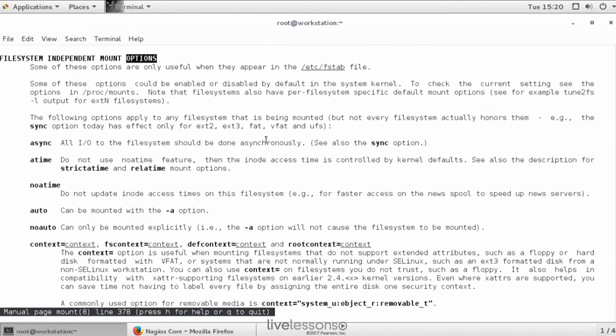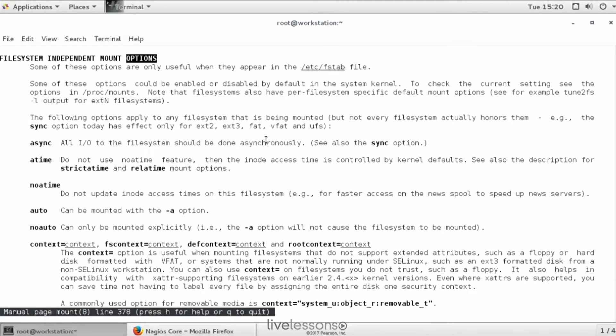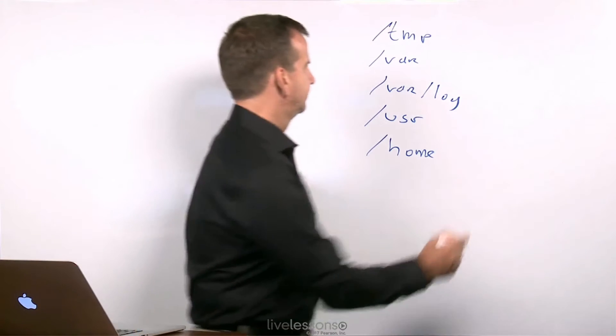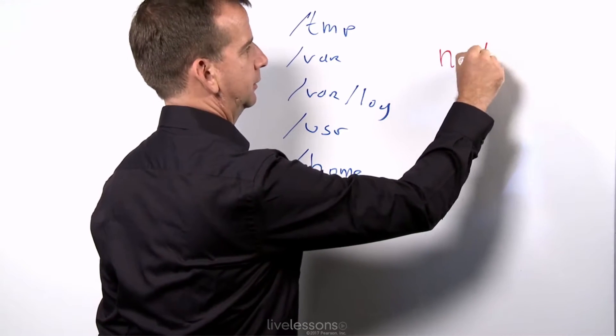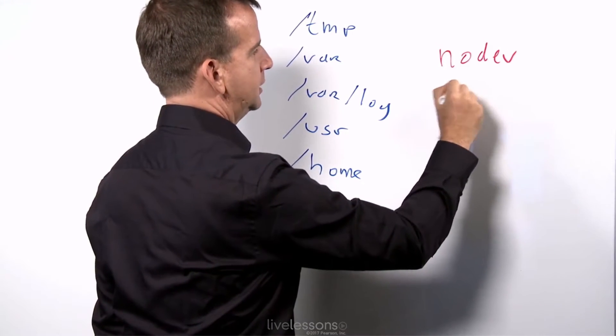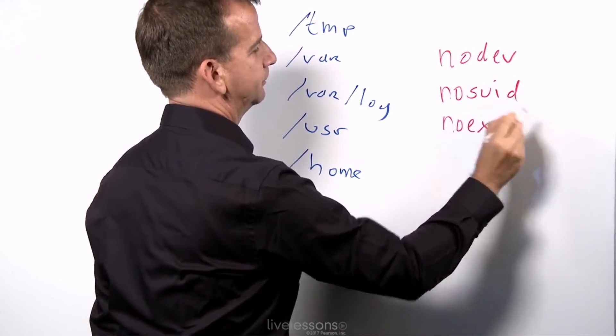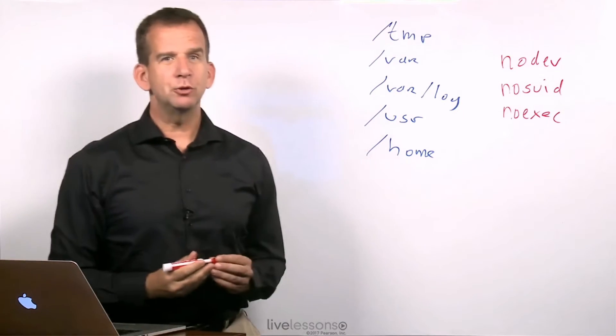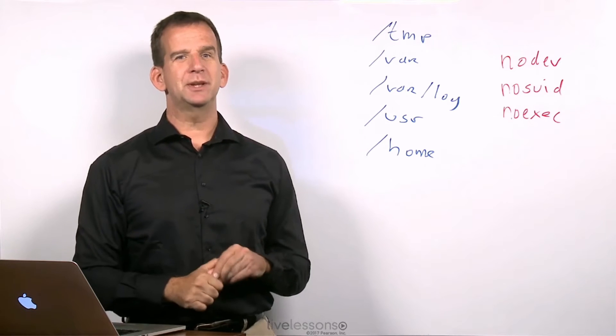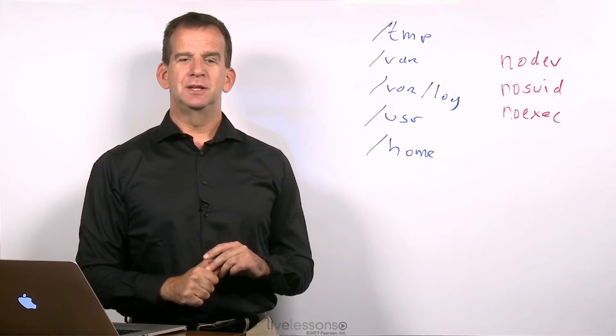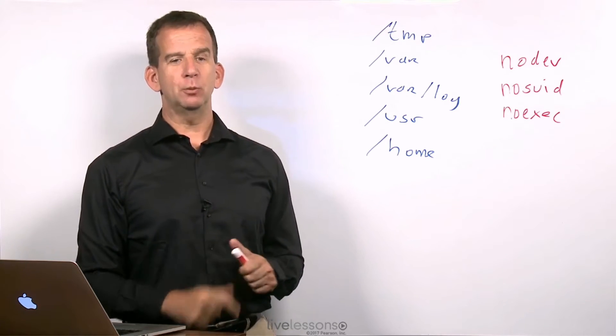You can see all the different mount options being listed here. Some of the options that are available in this file are in particular very interesting for security, like nodev, and nosuid, or noexec. So these options restrict the possibilities of what can happen with a file system that has been mounted with those specific options.